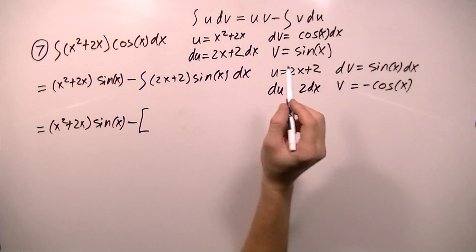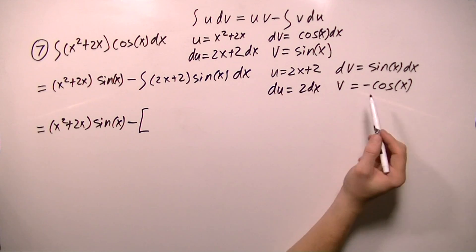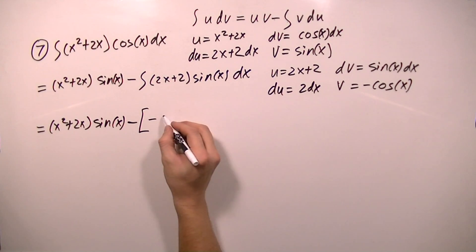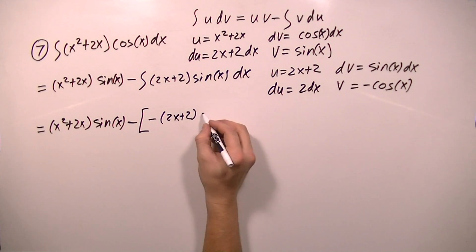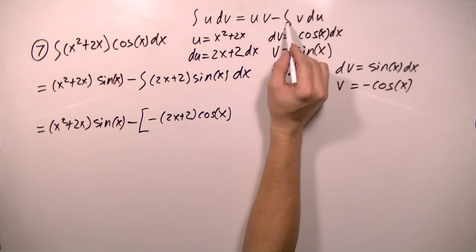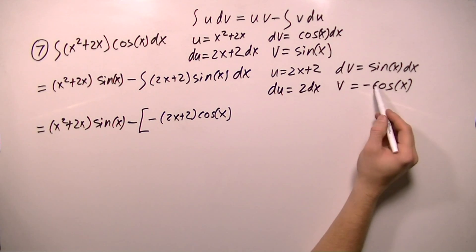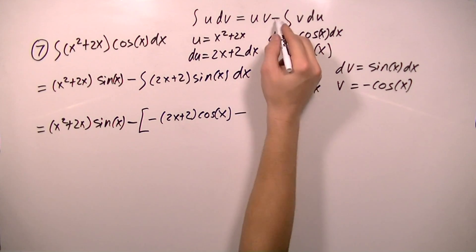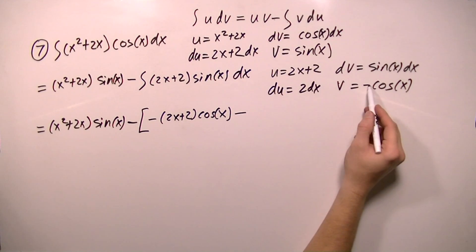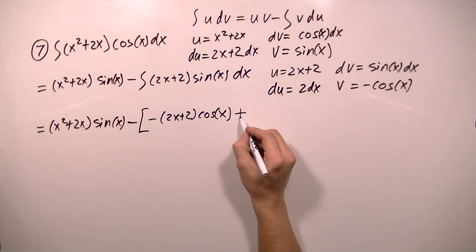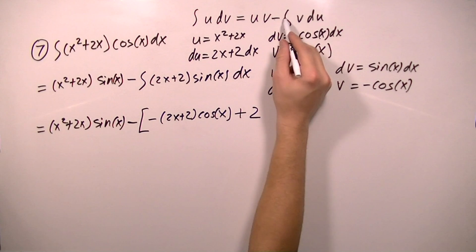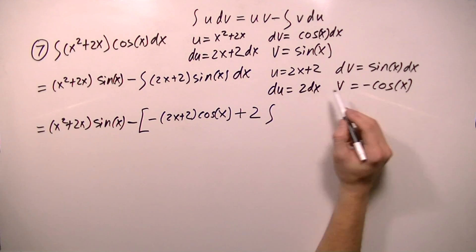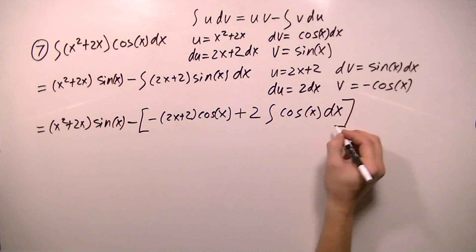So I'm going to start with u times v, and u is 2x plus 2, and v is negative cosine x. So I'm going to write that as negative 2x plus 2, cosine x, and then I need to subtract the integral of v du. So v is negative cosine x, and du is 2 dx. So I'm going to start by subtracting, like the formula says, but I'm going to factor out this negative and this 2. So that makes this negative a positive, and then the 2 comes out, and then I'm going to take the integral of what was left here, and that's going to be cosine x dx. And close my bracket.